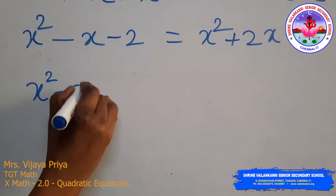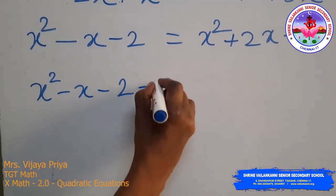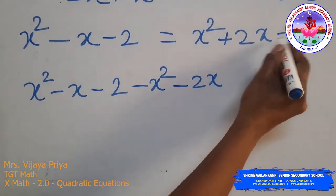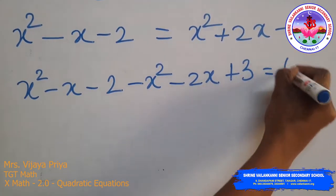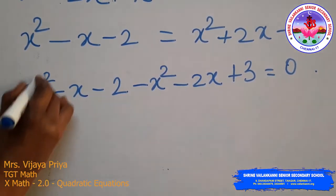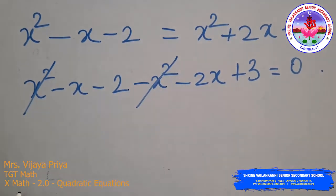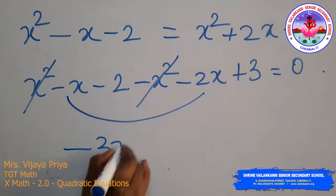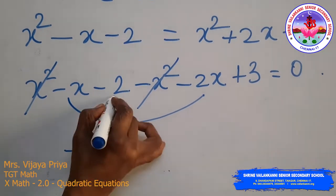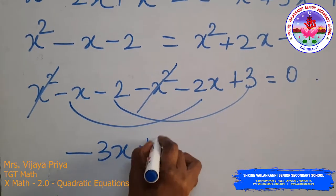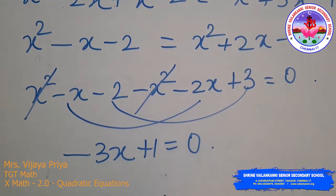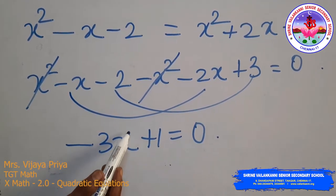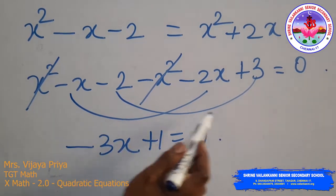Shifting all RHS terms to the left: x² − x − 2 − x² + 2x − 3 = 0. The x² terms cancel, and we get −3x + 1 = 0. Since the variable x has power 1, this is not a quadratic equation.